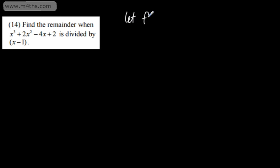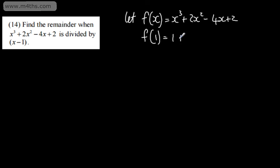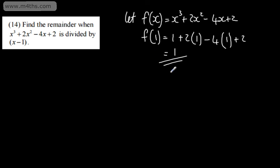In question 14, we're asked to find the remainder when x cubed plus 2x squared minus 4x plus 2 is divided by x minus 1. Often students use long division or equating coefficients, but we don't need to do that — we simply evaluate f(1). So, letting f(x) equal x cubed plus 2x squared minus 4x plus 2, f(1) gives us 1 plus 2 minus 4 plus 2, which equals 1. Therefore the remainder is 1.